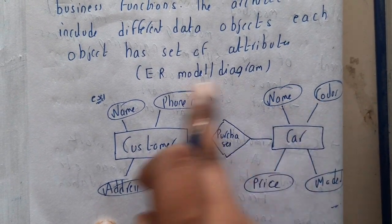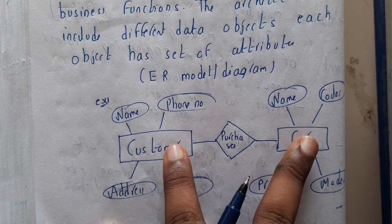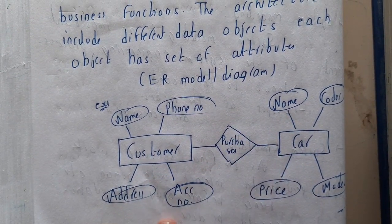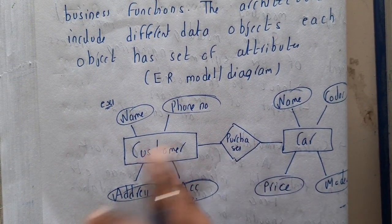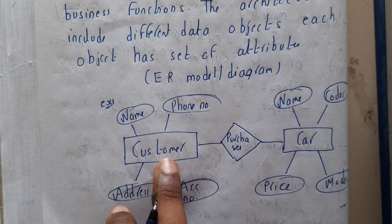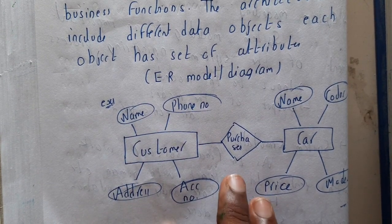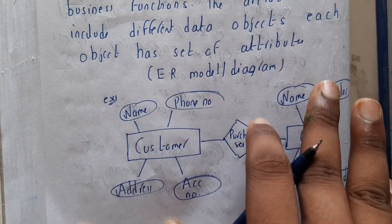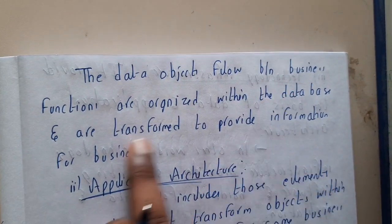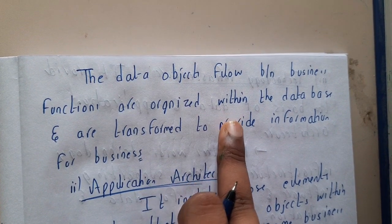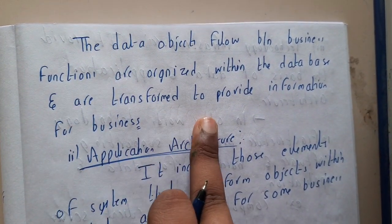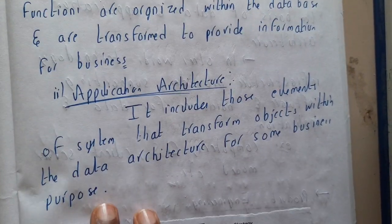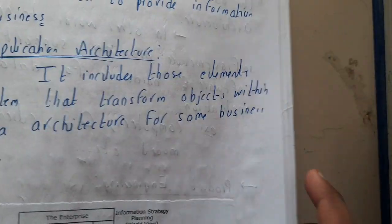Similarly, a car has attributes like price, model, color, and name. The car is being purchased by the customer, so that represents the relation between the data. If you give this ER diagram to any software engineer, they can identify the relation between those entities. The data object flow between business functions is organized within databases and transformed to provide information for the business.